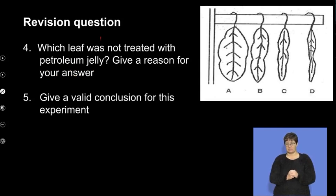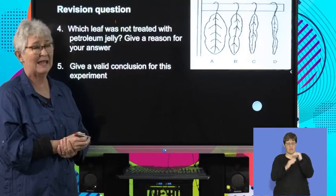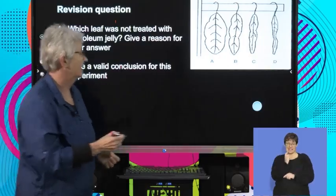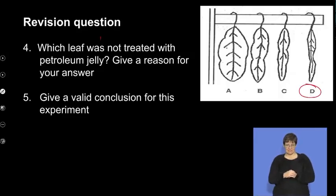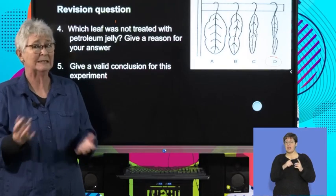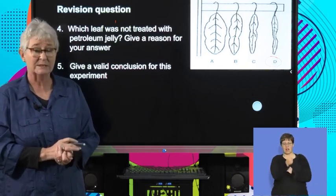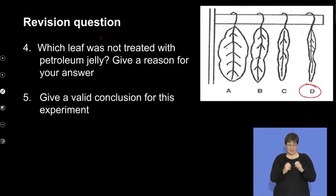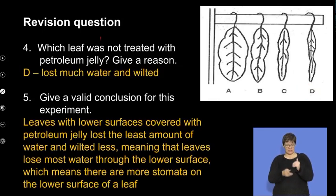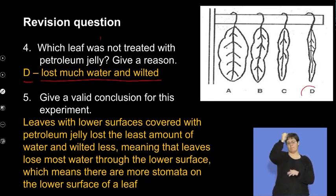Then more questions are asked. For example, which leaf had no petroleum jelly? And that should by now be quite easy to work out. It's got to be leaf D, because that poor leaf has shriveled up completely. In other words, it's lost more water than any of the others. So it obviously was the one that had no petroleum jelly on it.